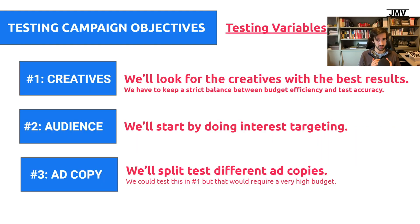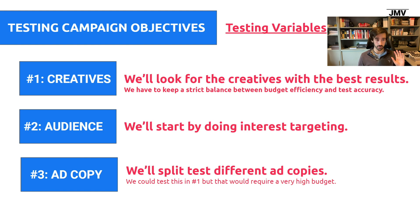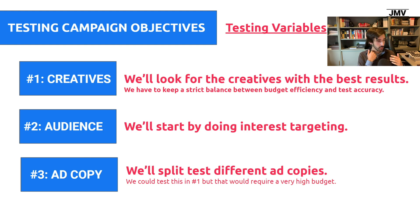The testing campaign is all about testing variables. The variables that we test are creatives, audience, and ad copy. When we test creatives, we look for the creatives that give you the best results. A very good creative will have a higher CTR — people are going to click more, which means cheaper clicks, a lower advertising cost, and a lower cost per acquisition, so your profit margin increases. We need to find the right audience through interest targeting, which is our quintessential element in the testing strategy. We'll also split test different ad copies, but we're going to leave that to the scaling phase so we don't commit too much budget to just testing creatives.